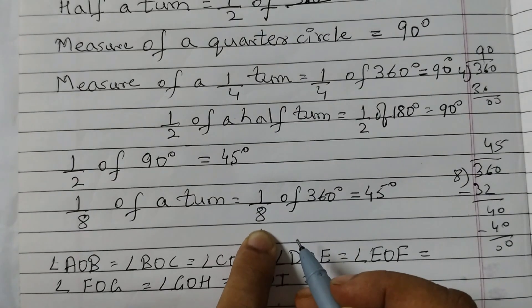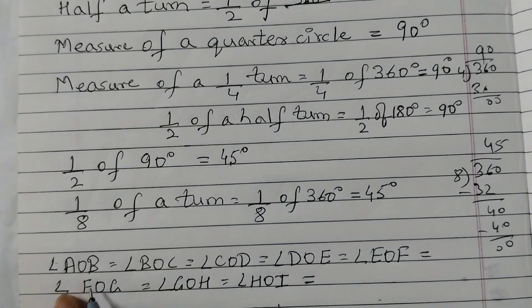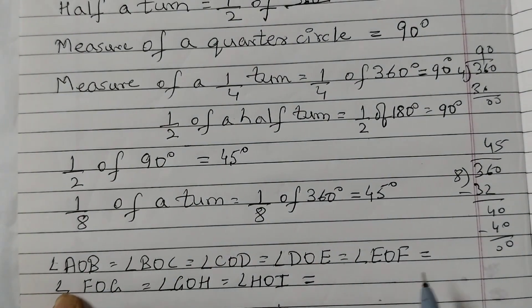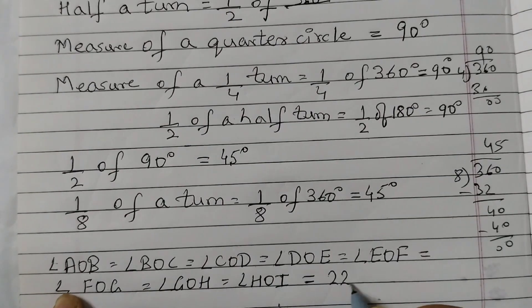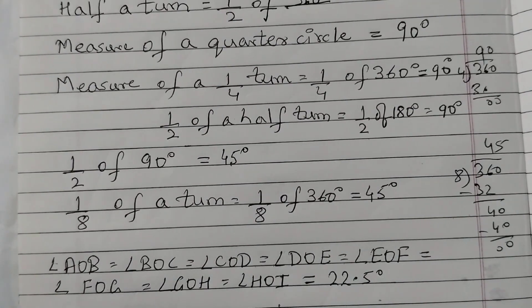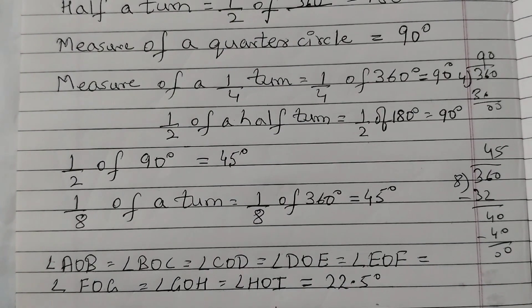And this one we already did: angle AOB, BOC, all this is equal to 22.5 degrees. So with this we complete the concept of our paper protractor. See you all in the next video. Thank you.